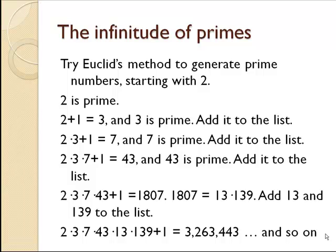Now we take two times three times seven times 43 and add one. We get 1807. 1807 is not prime — it's composite — but its prime factorization is 13 times 139. So we put both 13 and 139 on our list. Now we take the product of 2, 3, 7, 43, 13, and 139, add one, and we get 3,263,443. This process can go on forever. That's how we know there's an infinite number of primes.